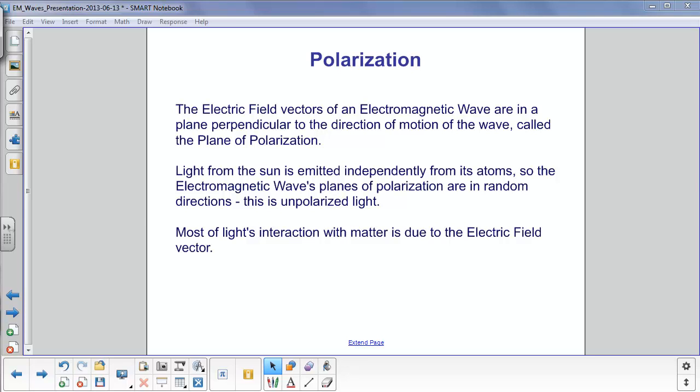We are now at the last topic in this chapter, polarization. The electric field vectors of an electromagnetic wave are in a plane perpendicular to the direction of the motion of the wave, and we're going to call that the plane of polarization.